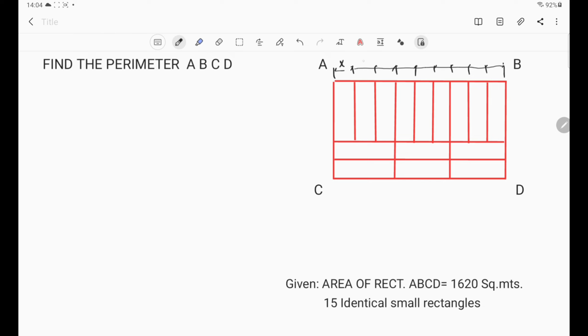If we let x be the width of the small rectangles, the measurement of AB is equal to nine x, which is equal to the line CD. So if it is nine x, this will be three x. It is divided into three equal parts. So this is three x.